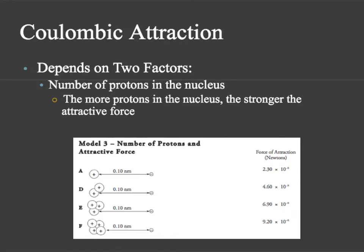The second factor that Coulombic attraction depends on is the number of protons in the nucleus, or the magnitude of the charge. The more charge, the stronger the attractive force. We saw in the activity that if you had just one proton, the force was 2.3 times 10 to the negative 8 newtons. However, if we had four protons, the force went up quite a bit. So the more particles you have inside your nucleus, the stronger the attractive force can be.